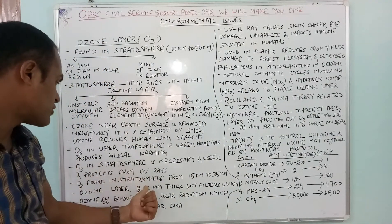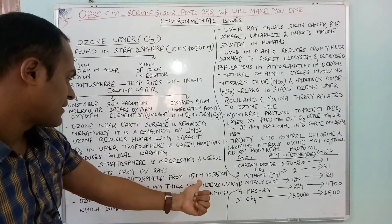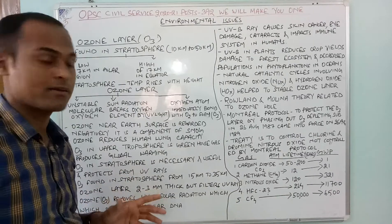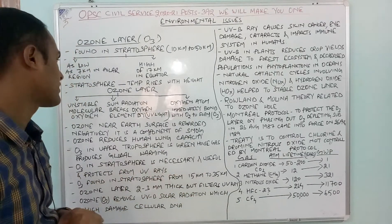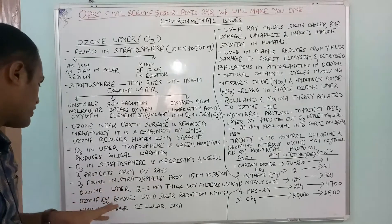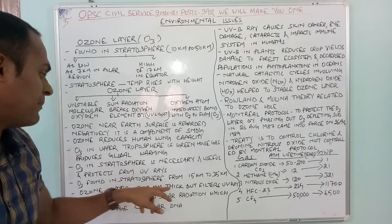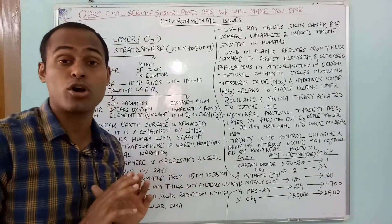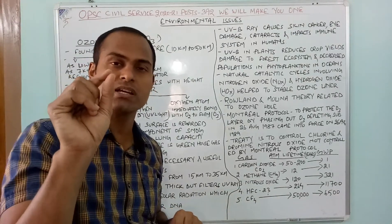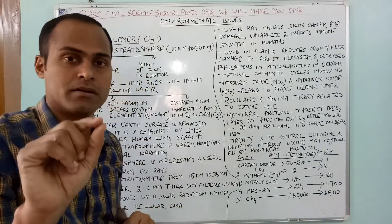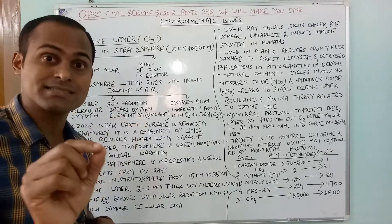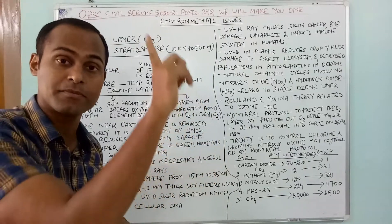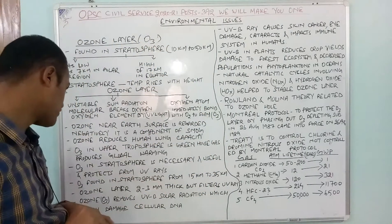Ozone is generally found in the stratosphere from 15 to 35 km. Very importantly, the ozone layer is only 2 to 3 mm thick, but it filters UV rays — it reflects the harmful ultraviolet light from the sun back into the atmosphere.